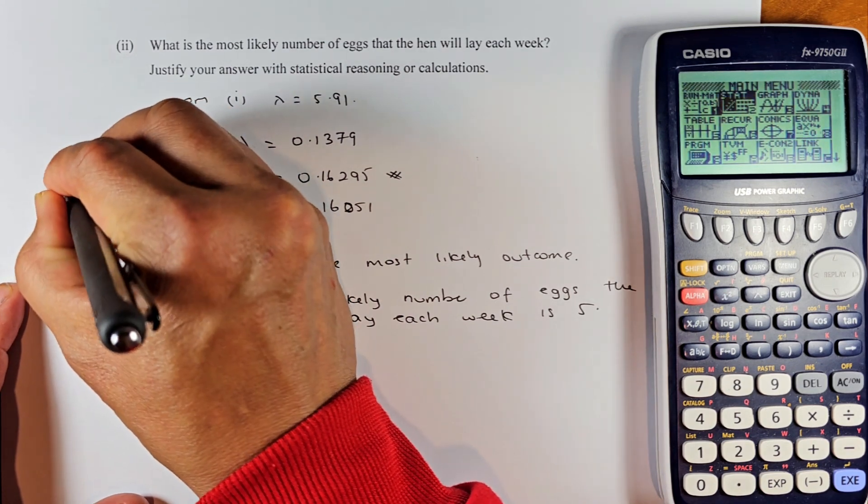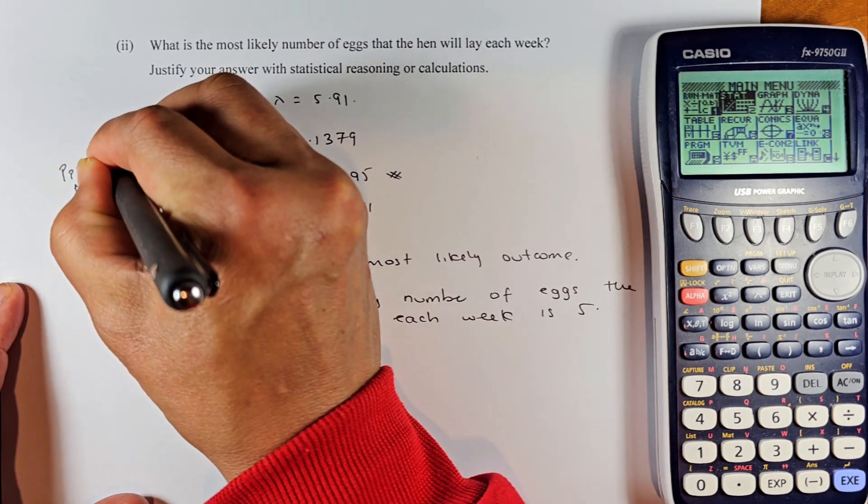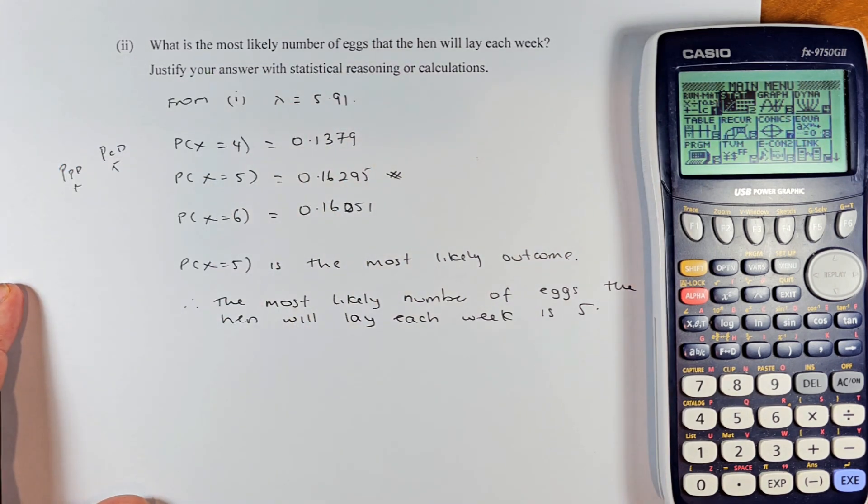Remember, by point PPD, PCD is cumulative. Cumulative is from 0 to whatever number. Now we're going to use the calculator to solve this.